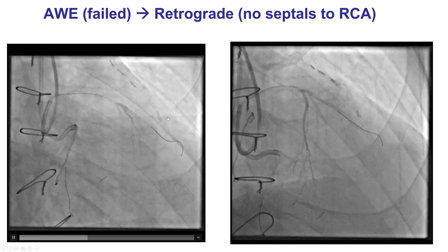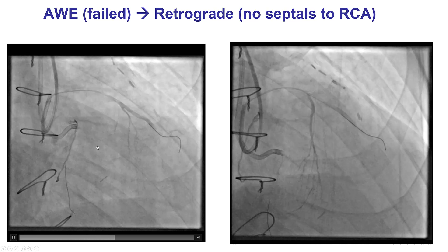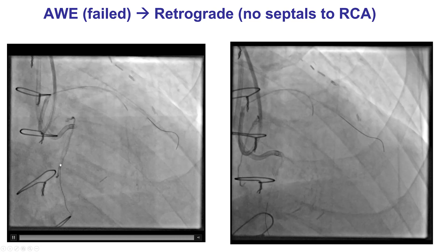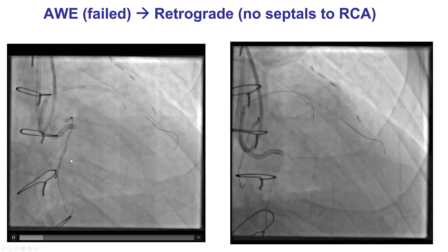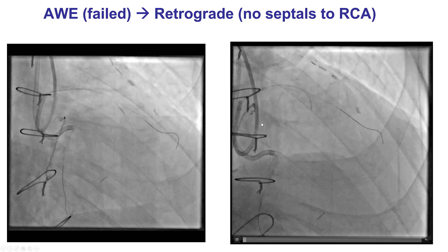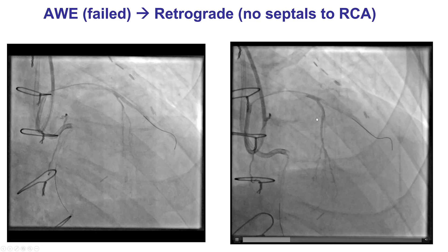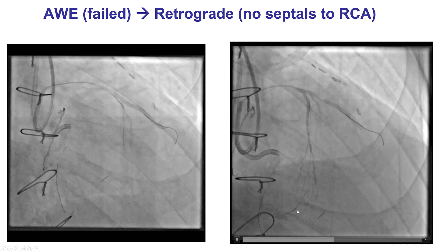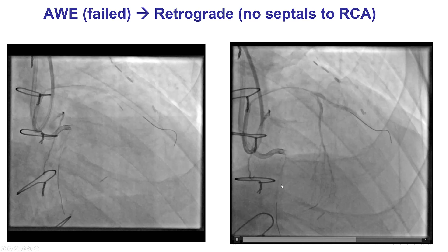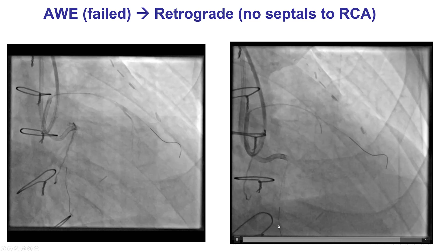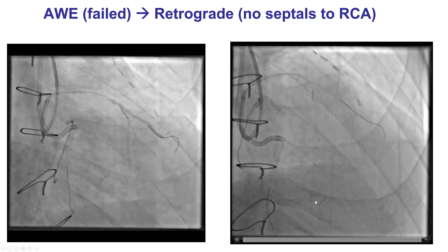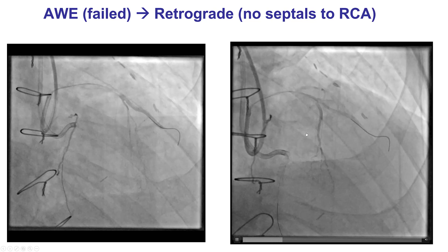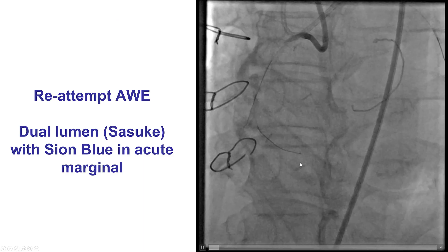We tried antegrade wire escalation, but we were unable to engage the occlusion, and we decided to switch to retrograde, as we thought that there was a good connection with the PDA, although there was no opacification of the PDA from the septal on this selective injection.